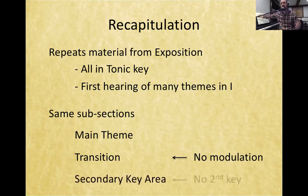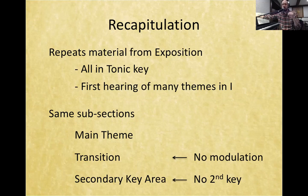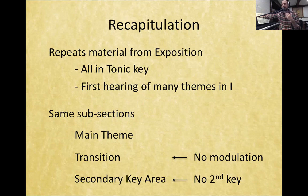When we get to the secondary key area in the recap, we don't actually go to a secondary key — we hear those themes in the home key for the first time. So if a piece is called Sonata in G major or Sonata in E-flat major, the end of the recapitulation is the first time where we actually hear some of the most central musical ideas in the home key. It's the first time they're stated in their true essence, which I think is really wonderful — the recap is finally arriving home, and those themes sound great.